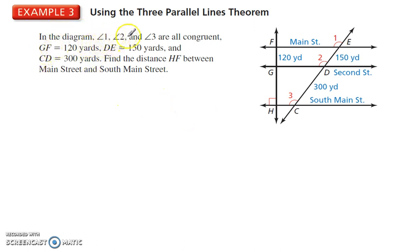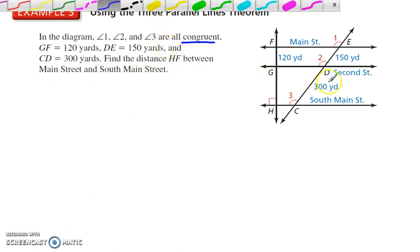In the diagram, angles 1, 2, and 3 are all congruent. GF is 120 yards, DE is 150, and CD is 300 yards. Find the distance HF between Main Street and South Main Street. Now, they have not told us that these lines are parallel, so we'd have to establish that first.